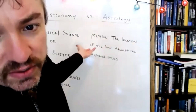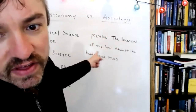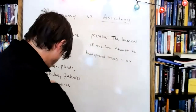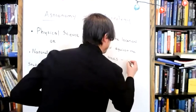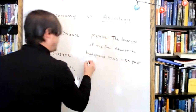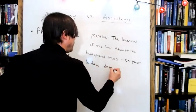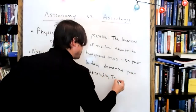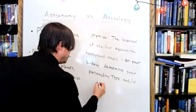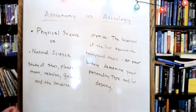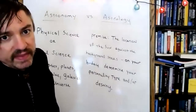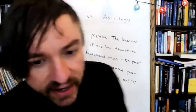The location of the sun against the background stars — and here's where it gets good — on your birthday, the location of the sun against the background stars will determine your personality type and, or, your destiny. The location of the sun against the background stars might not even make sense to some of you. What the hell do I mean by that? Let me show you a little diagram to help you understand. Everything I write down, I want you guys to write down — that's important.